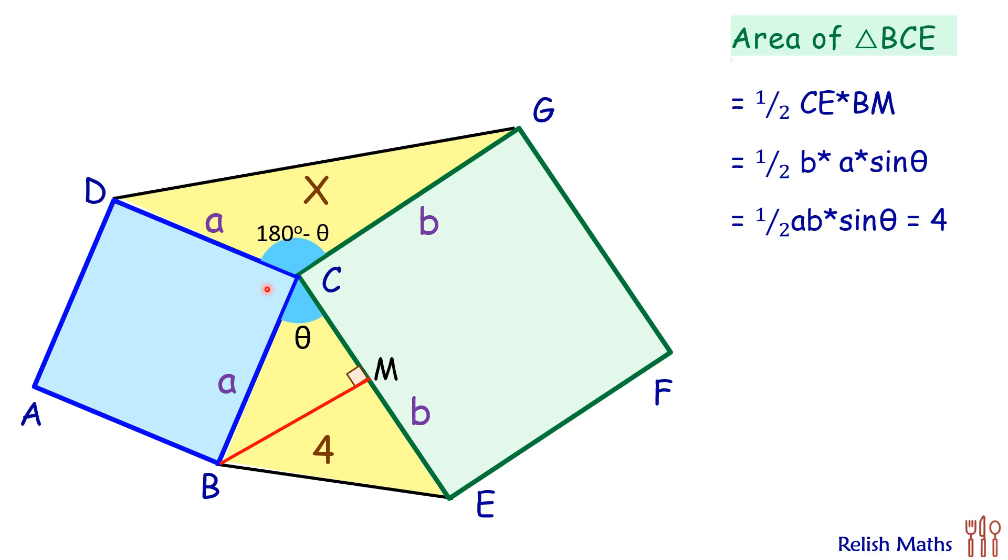will be half of base, that is CG times DN. Now CG we know is b units, so half of b. And DN—if we look at this triangle DNC, this angle